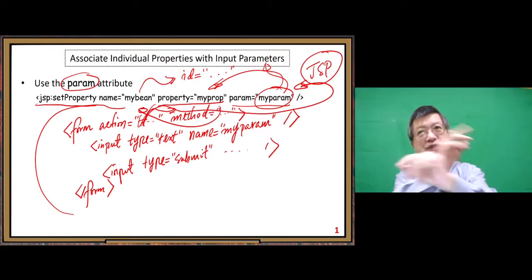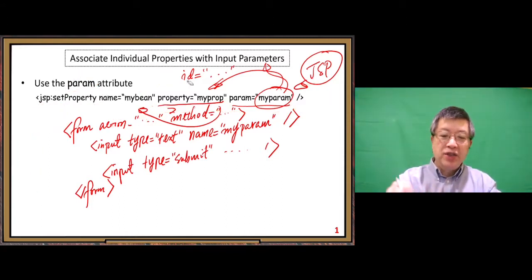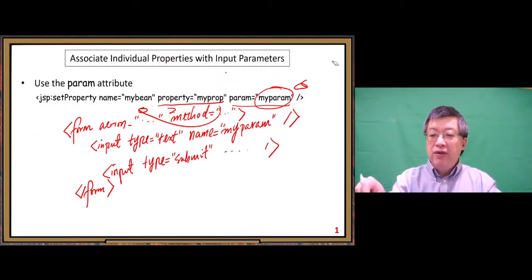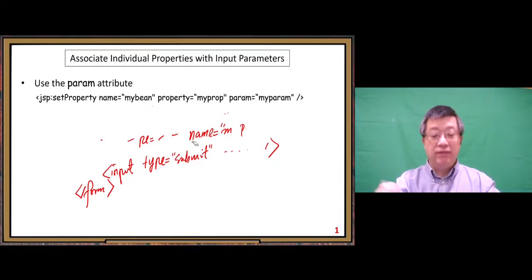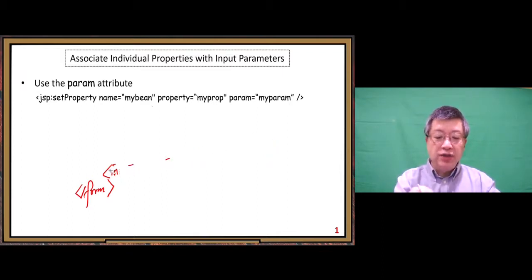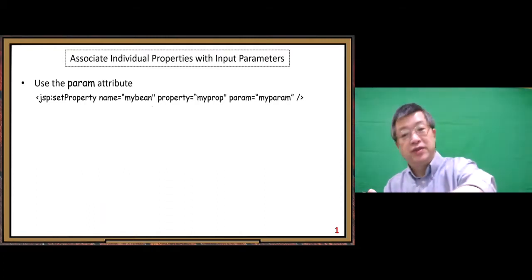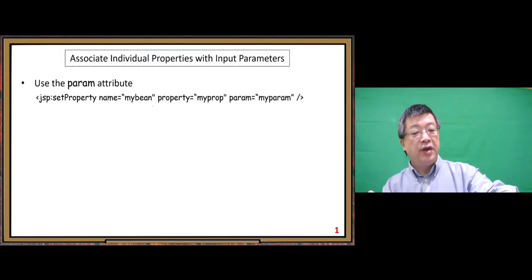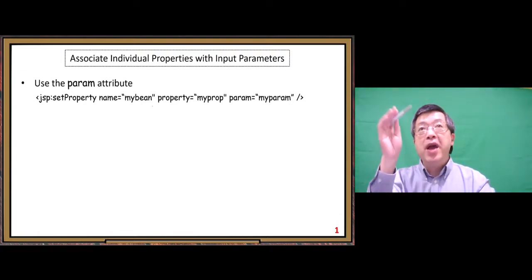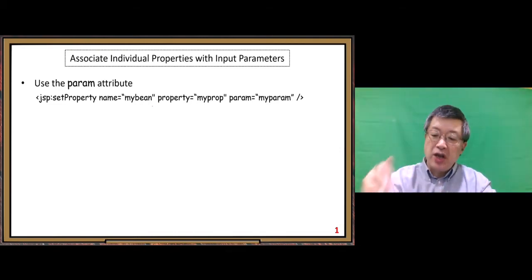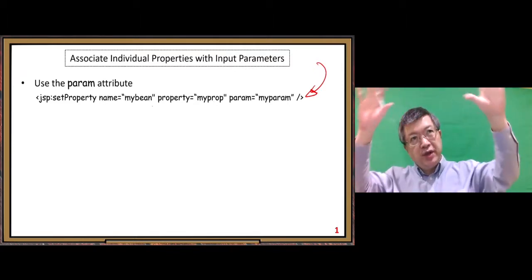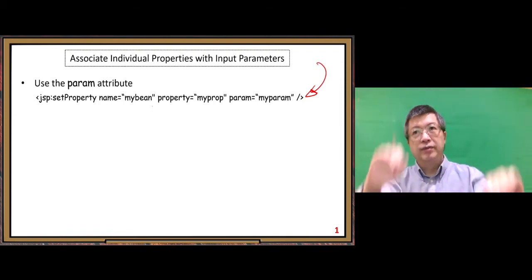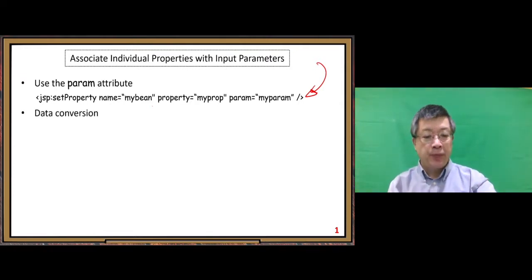So here I describe a typical situation. Typical situation means sometimes you may not follow things exactly like this. Sometimes you may have a different way to send the data. For example, you can use a JavaScript function to send data to this JSP. Or you can use a hyperlink to send the data. So you have many different ways to send data to this JSP data processing file.